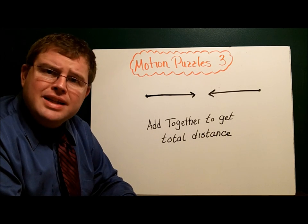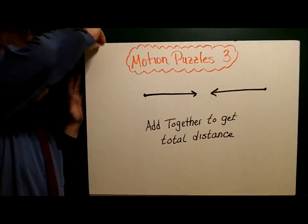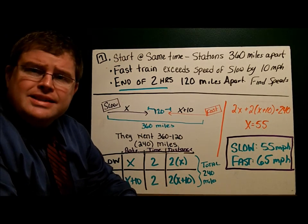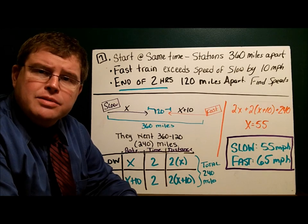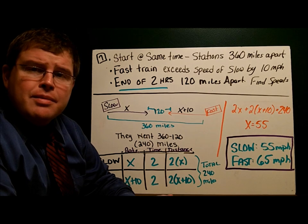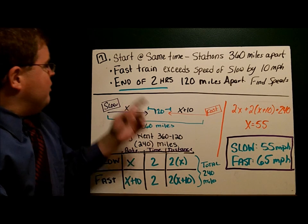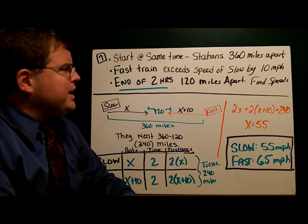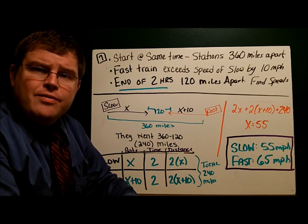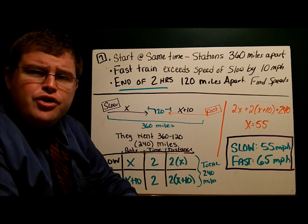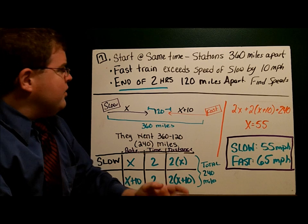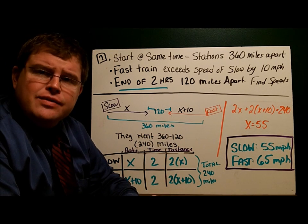Let's take a look at our first example to see how this works. We have two trains starting at different train stations that are 360 miles apart. We have two trains - the fast train and the slow train. The fast train exceeds the speed of the slow train by 10 miles per hour. They travel for two hours, and after two hours they're still 120 miles apart. The question is, how fast is each of the trains going?